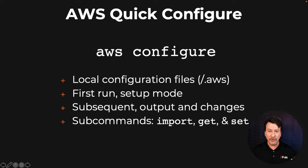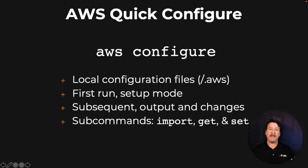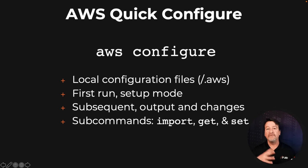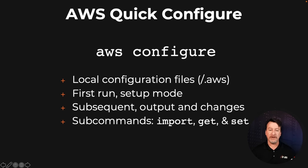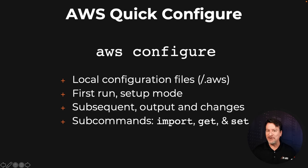But in order to start with, we've got to go out to the console and actually generate an access key and secret access key. When we first run it, it's sort of in setup mode — it's going to ask us for that stuff. Once you've run AWS configure, it'll output what's already there and you can overwrite what's appearing. Also, we have import, get and set, which are very important quick ways of setting different things like configuration or access keys without completely running AWS configure from the top. So I'm going to jump into my console and terminal and let's run AWS configure together.